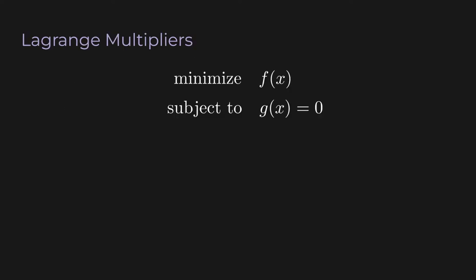So now that we know how to do things geometrically, let's find a closed-form solution. But first we need to talk about Lagrange multipliers. Many of you have probably come across this before in some math or economics class, but they're never taught very well. I'm not going to go into all the gory details, but I'll give you the intuition and show you how to use it. We have an optimization problem: minimize the function f(x) subject to the constraint g(x) equals 0. The top part is called the objective function, and the bottom part is the equality constraints.